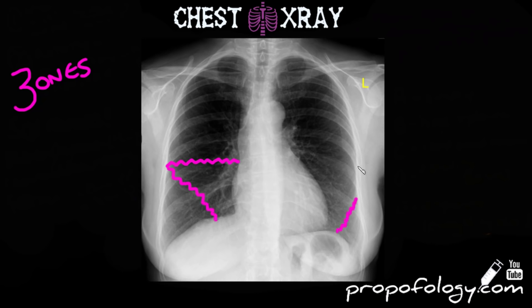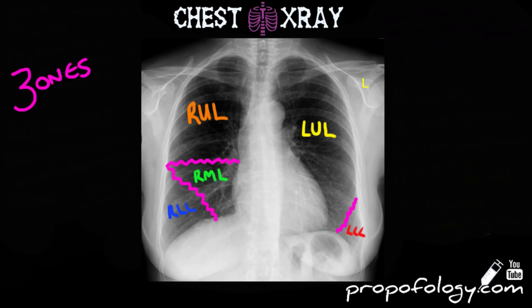There are two lobes on the left and three lobes on the right. On the right we have the right upper lobe, the right middle lobe, and the right lower lobe. On the left we have the left upper lobe and the left lower lobe. The lobes aren't exactly equal thirds of what you see on screen, which is really important when identifying structural abnormalities or pathology. For example, what you might think is the right lower lobe is probably the right middle lobe — the right lower lobe is much more lateral, because for the most part it is posterior to the middle lobe. The same applies to the left lower lobe relative to the left upper lobe.